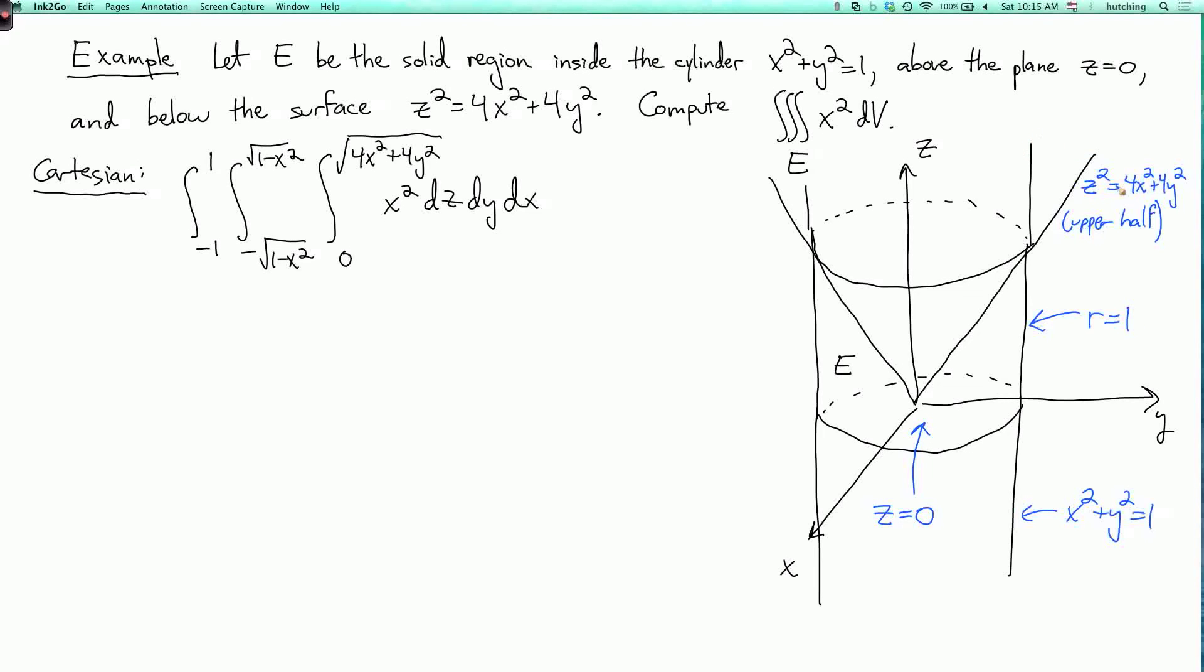and the cylinder x-squared plus y-squared equals 1, I can just write as r equals 1. And what about the cone? Well, this says that z-squared equals 4r-squared. And since I only care about the upper half of the cone, the upper half is where z equals 2r. The lower half of the cone would be z equals minus 2r. So our bounding surfaces are z equals 2r, r equals 1, and z equals 0.